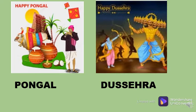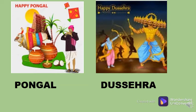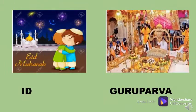The next one is Dussehra — D-U-S-S-E-H-R-A. In this festival, Lord Rama killed Ravana, so this festival is symbolized as good over evil. We burn the puppet of Ravana in this festival, symbolizing that we are throwing the evil from our life.